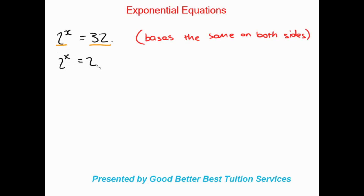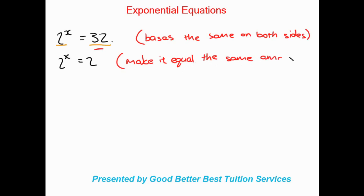After bringing the base to 2, you need to think: what do I need to do to make this side still equal the same amount — still equal 32? The easiest way is by looking at powers: what power do I put 2 to in order to get 32? If you work that out, you get 5 — so 2 to the power of 5 gives me 32. Therefore I've made this side still equal to 32, so it's not wrong.